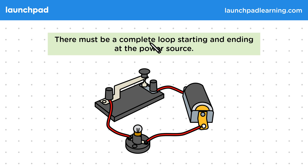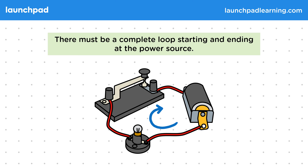There must be a complete loop starting and ending at the power source. This is a very important rule that all circuits need to follow. What it means is that there must be a loop from one end of the battery to the other. There can be branching paths in a circuit, but at no point can the current go back on itself. We also call this type of path around the circuit a closed loop.